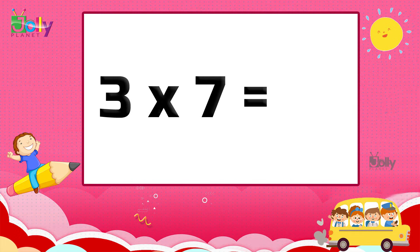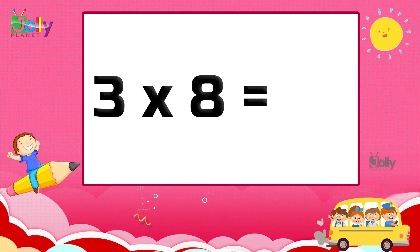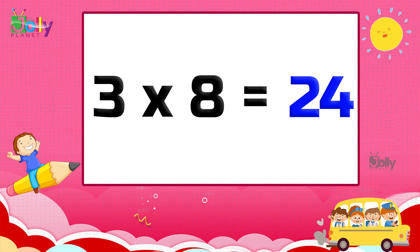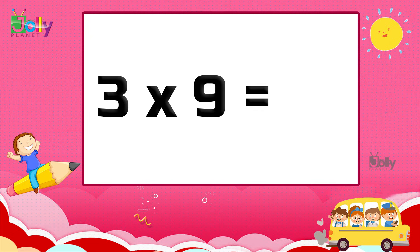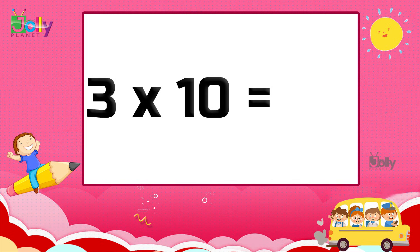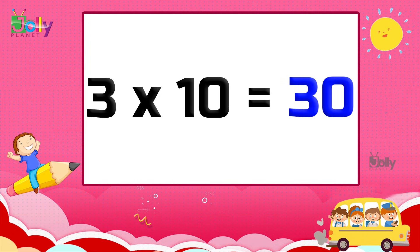Three seven's are twenty-one. Three eight's are twenty-four. Three nine's are twenty-seven. Three ten's are thirty.